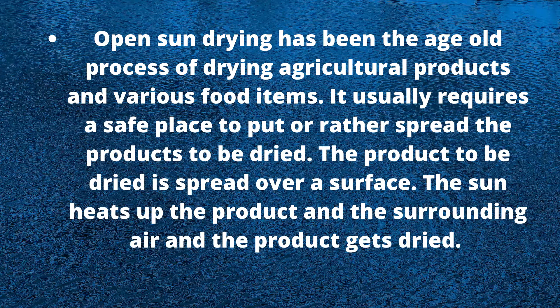Open sun drying usually requires a safe place to spread the product to be dried over a surface. The sun heats up the product and the surrounding air, and the product gets dried. However, the disadvantages are that there is no control over the drying rate, and hence no uniform drying. The process is very slow, and there is no control, which can lead to deterioration.